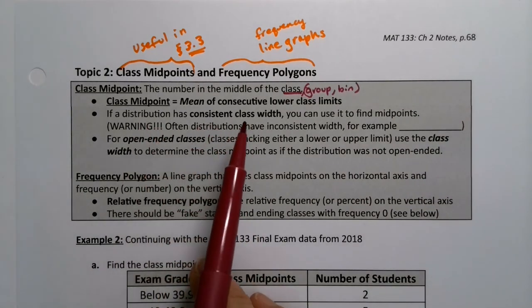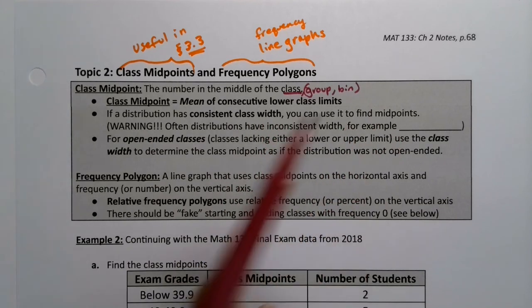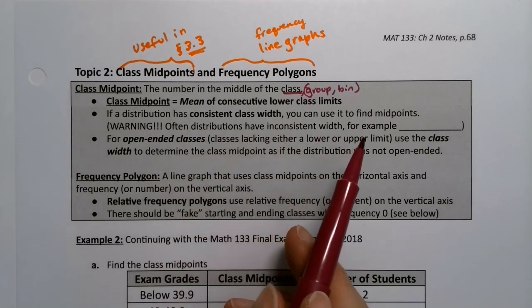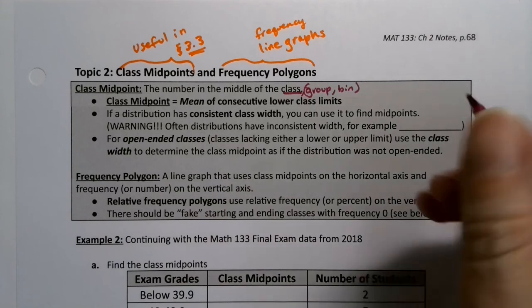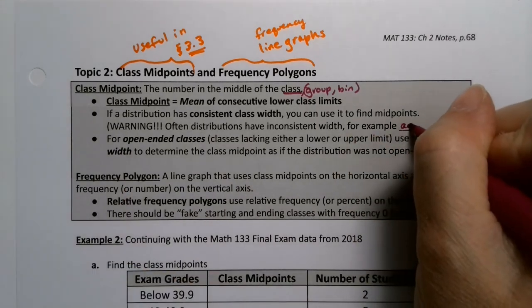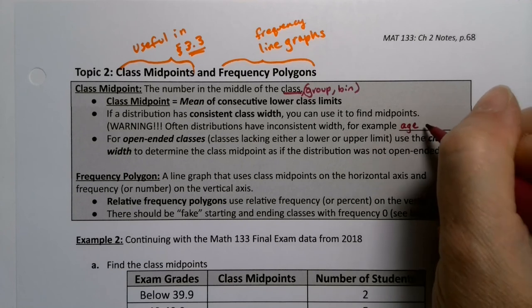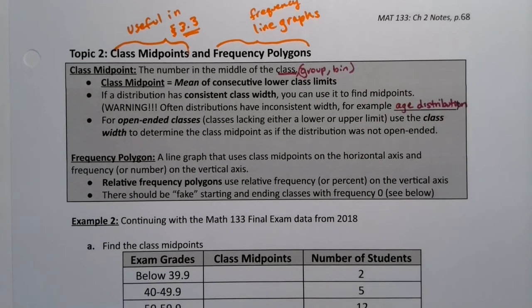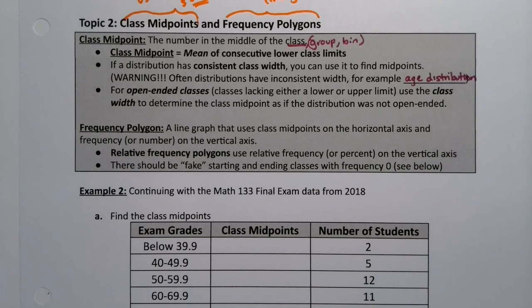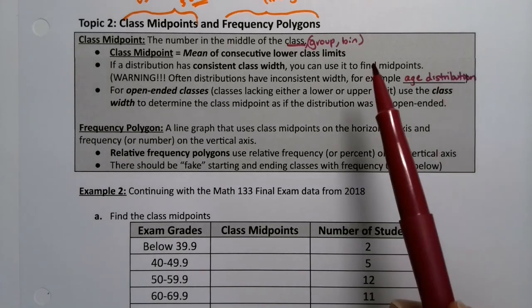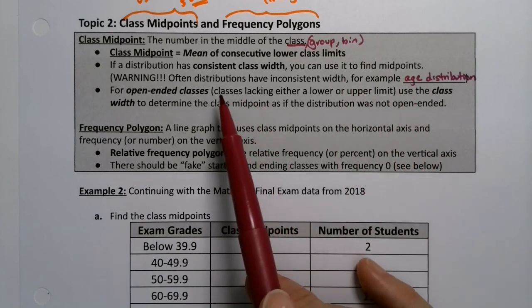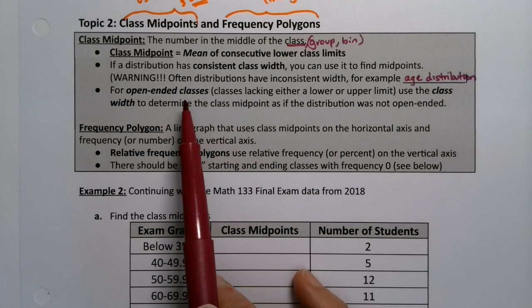Now, if a distribution has consistent class width, you can use it to find the midpoints. But often distributions have inconsistent widths. For example, age. So age is not always consistent. Age distributions are frequently not consistent because we have different reasons for lumping children together than teenagers and so on, and those widths are not the same.